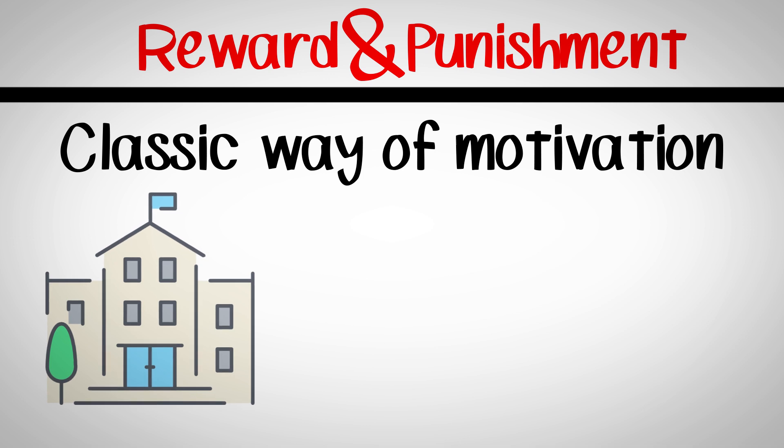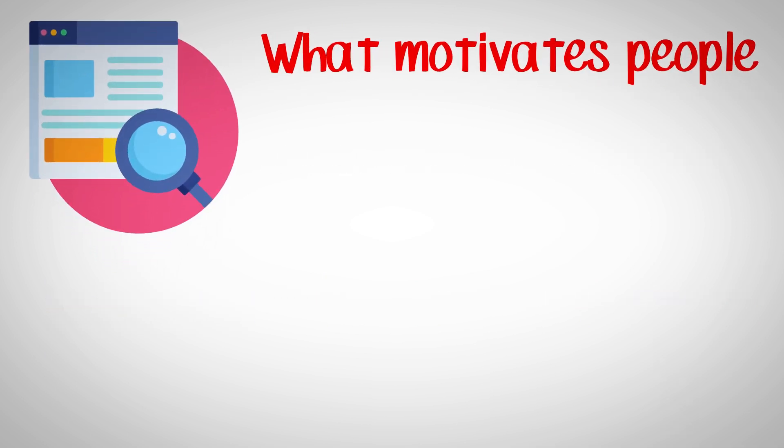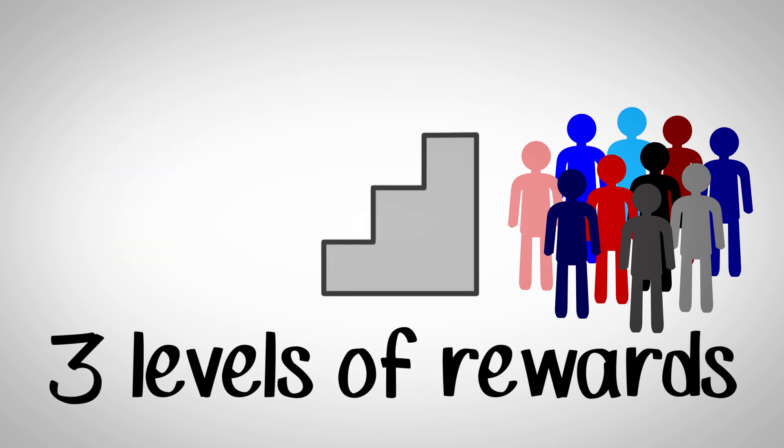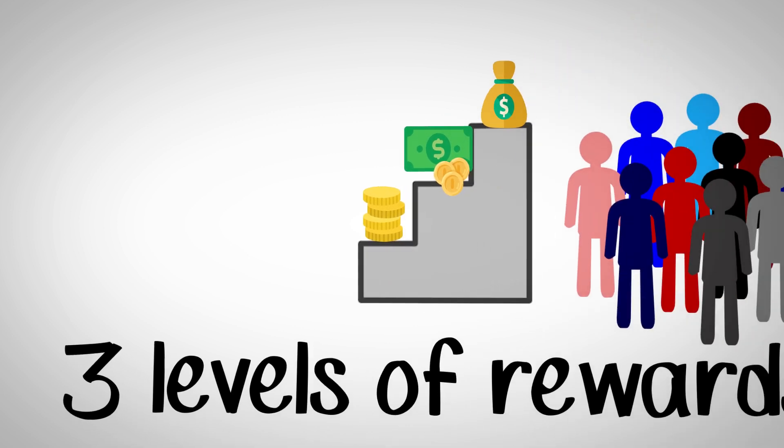But researchers at MIT who were studying human behavior found something that surprised everyone. They were conducting a study trying to determine what makes people motivated. They told people that there were three levels of reward. The first level was a very small reward, the second level was a slightly higher reward, and the third level was the highest amount of money.